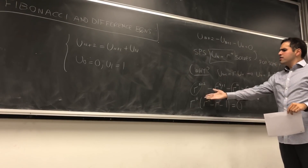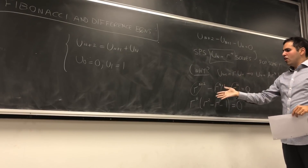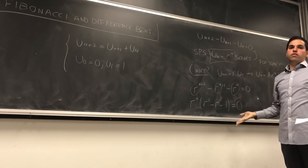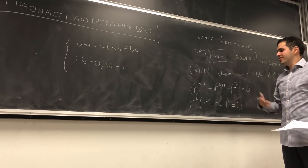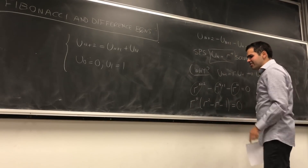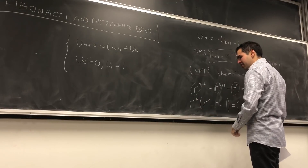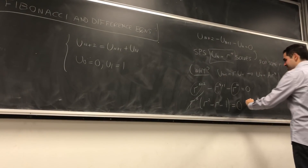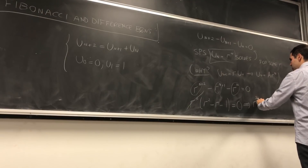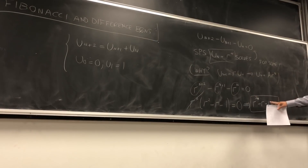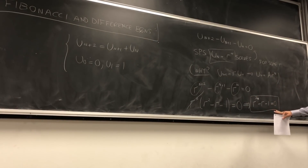If r equals 0 we just get a trivial solution — u_n would be 0 — which is not interesting. So assuming r is non-zero, we can cancel r to the n and we get the equation r squared minus r minus 1 equals 0. Just like in differential equations, this is called the auxiliary equation, because it literally helps us solve our equation.